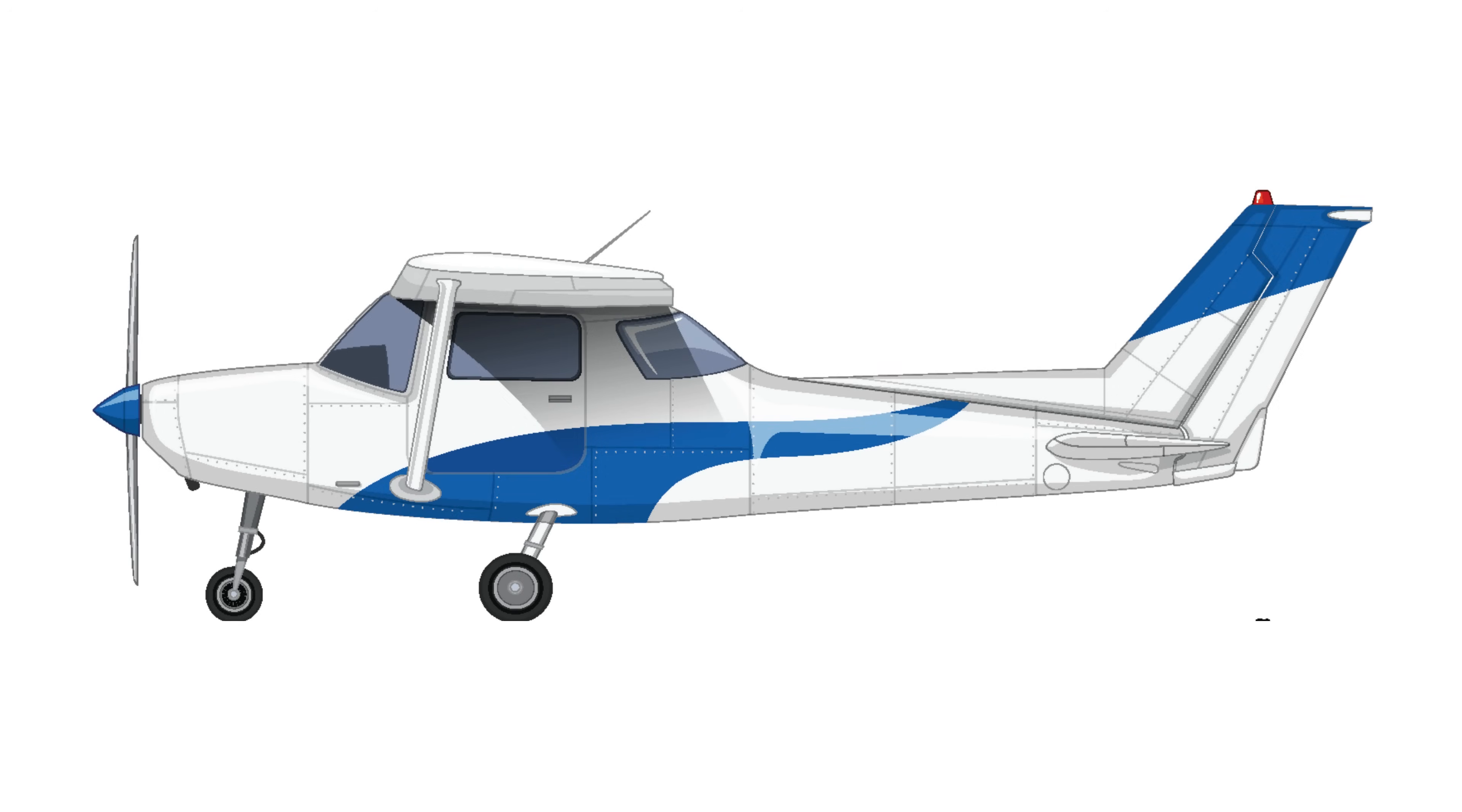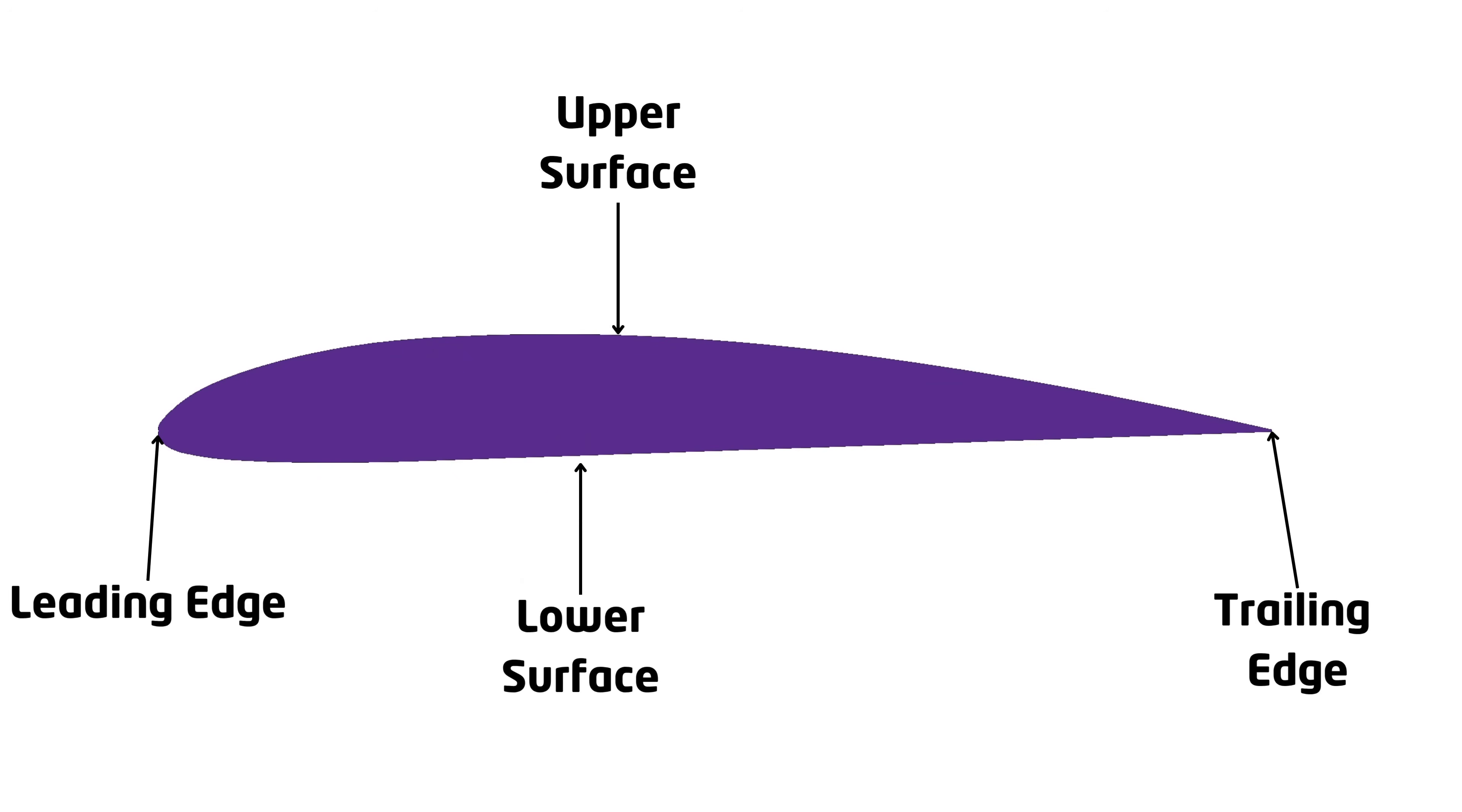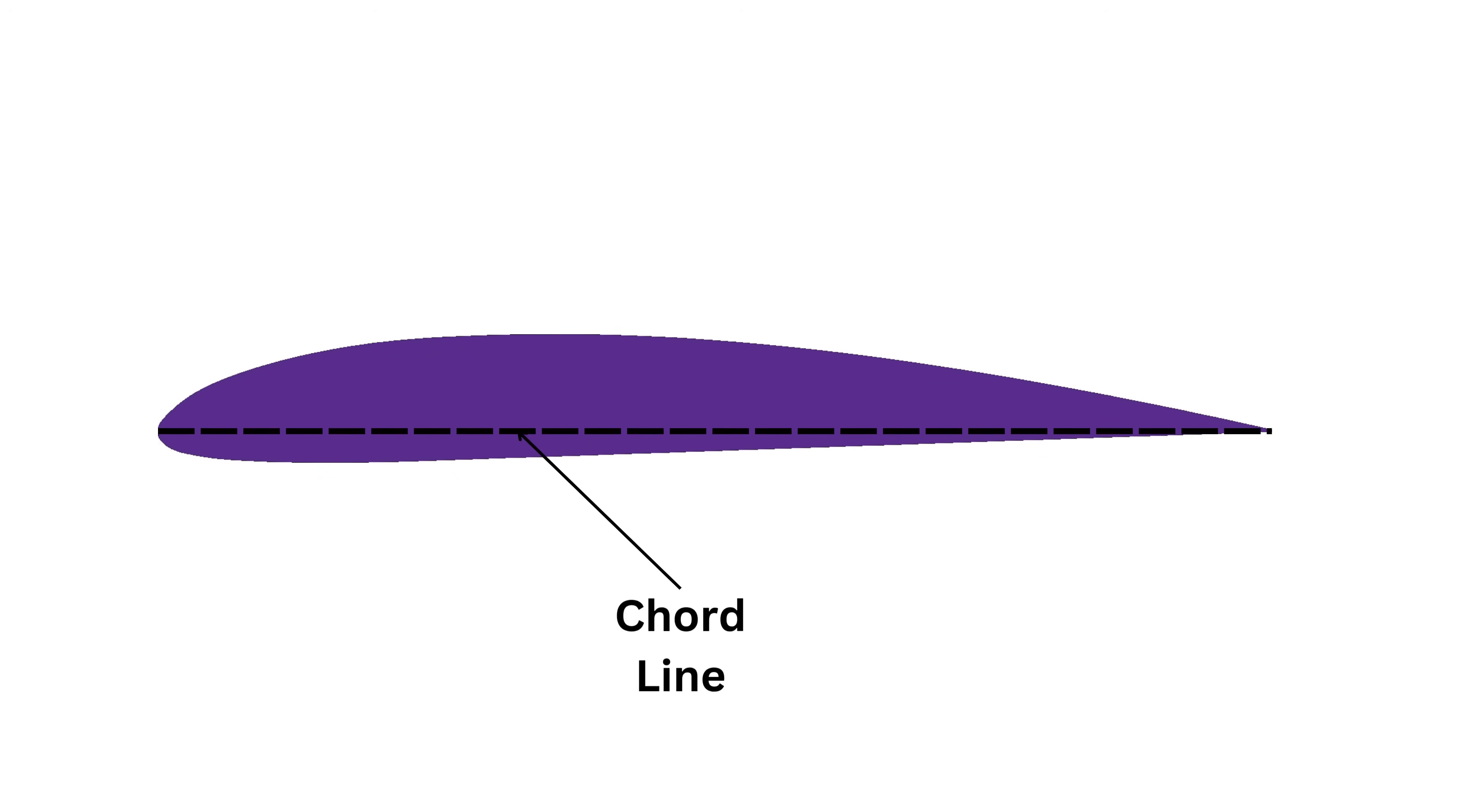An airfoil is the two-dimensional cross section of a wing. The geometry of an airfoil gives it its aerodynamic properties. An airfoil's geometry consists of its leading edge, the trailing edge, upper and lower surfaces. The chord line is an imaginary line between the leading and trailing edge. It helps us determine the orientation of the airfoil relative to the flow. The camber line is an imaginary line halfway between the upper and lower surfaces, which represents the average shape of the airfoil. It helps us visualize the curvature of the airfoil.